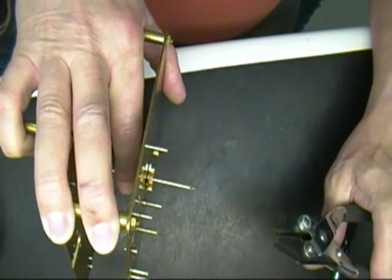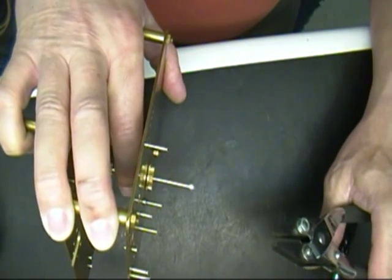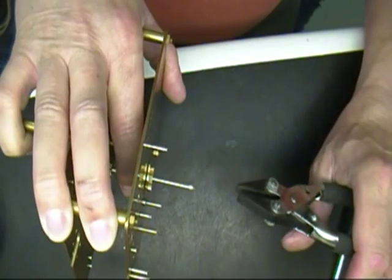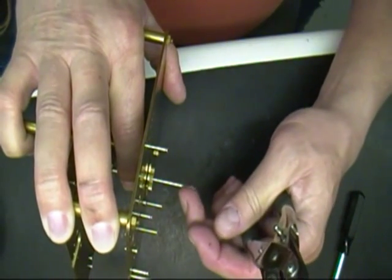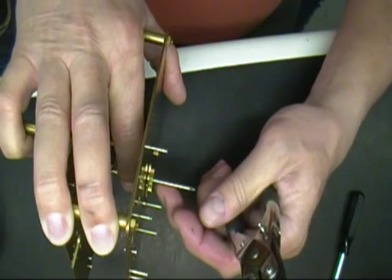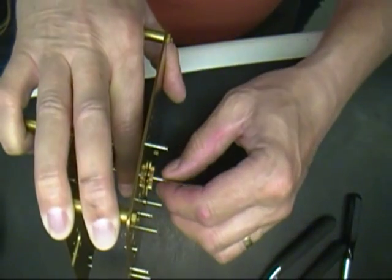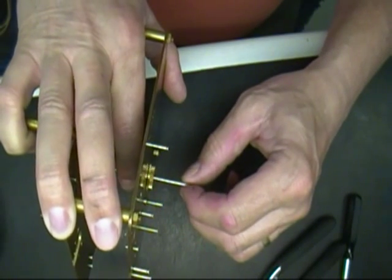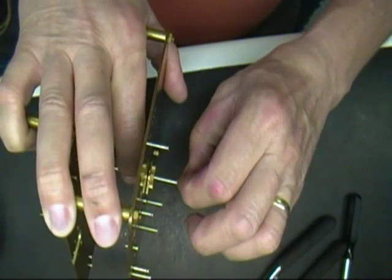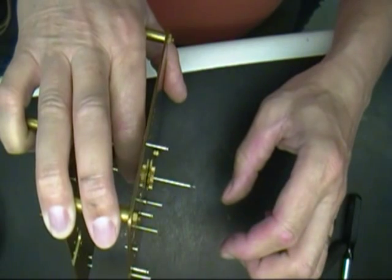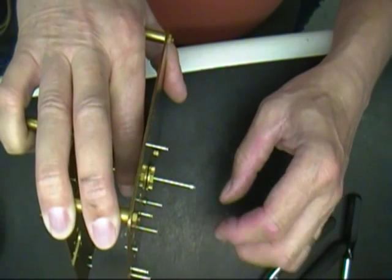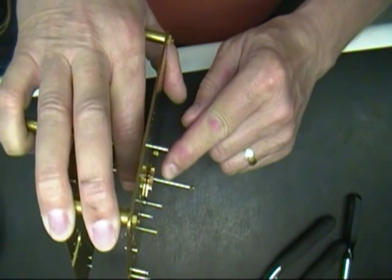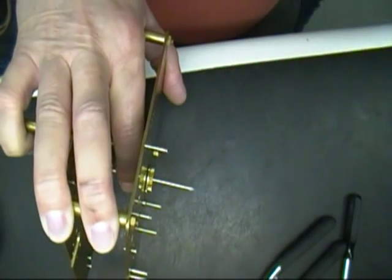And you definitely want to use a smooth jaw plier because the teeth on a regular plier would mess up these bearing surfaces tremendously. Hopefully we didn't mess them up. I don't feel anything. It's got a little wiggle jiggle in the center there, but it's running pretty true now.